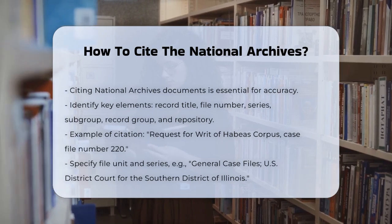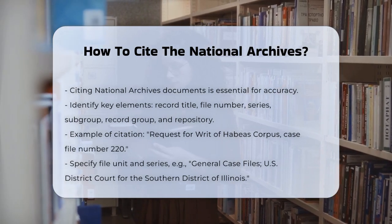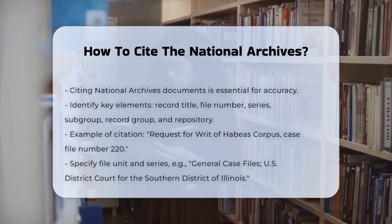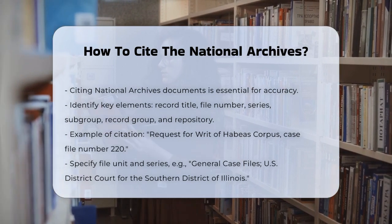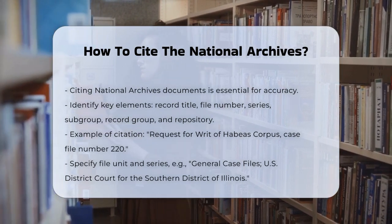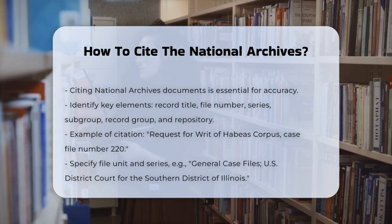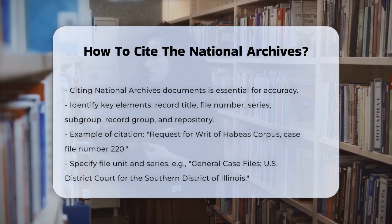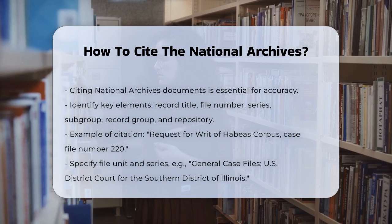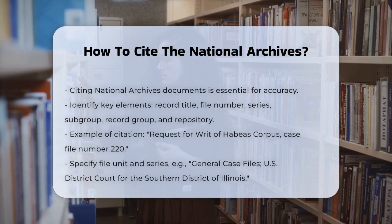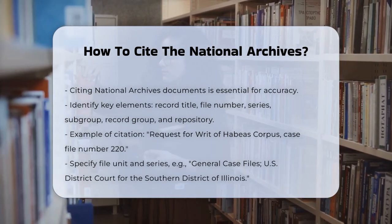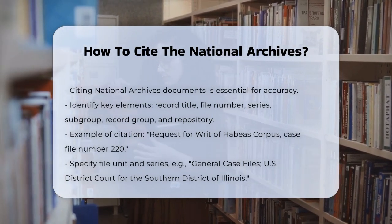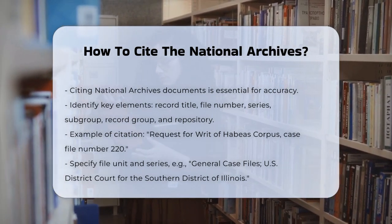First, you need to identify the key elements of the document. This includes the record title, the file number or record locator, the series, the subgroup, the record group, and the repository where the document is located.